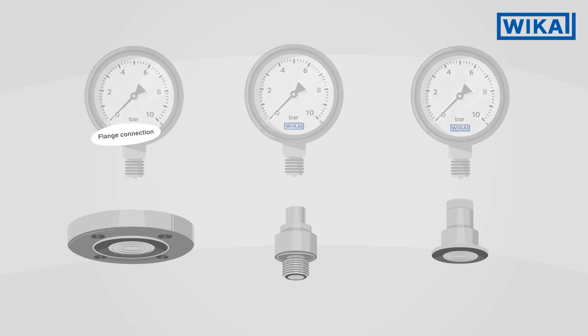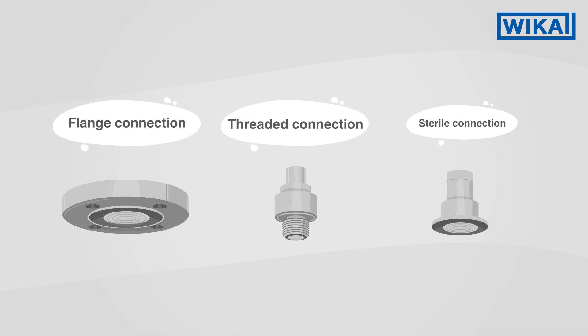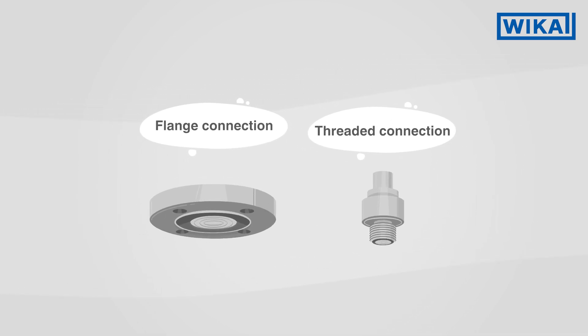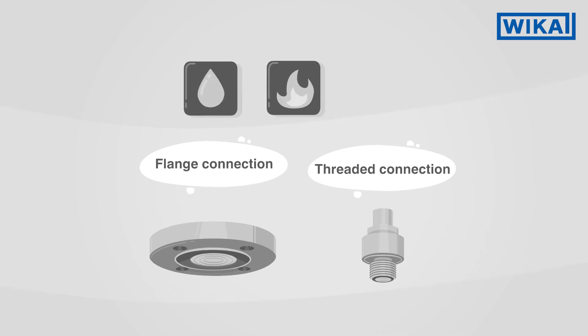A distinction must be made between different types of connection. Diaphragm seals with flange and threaded connection are used, in particular, in the oil and gas industries, as well as in the chemical industry.